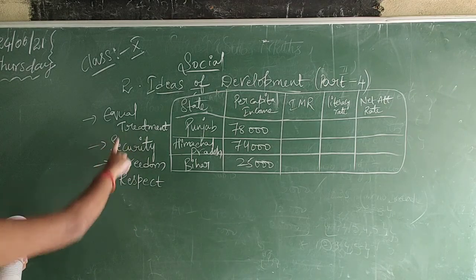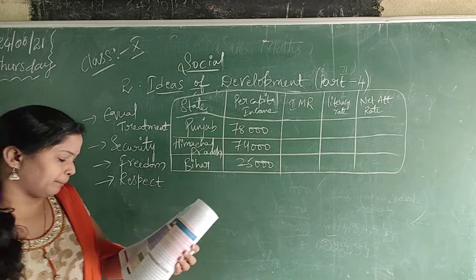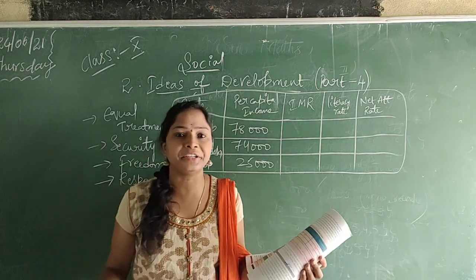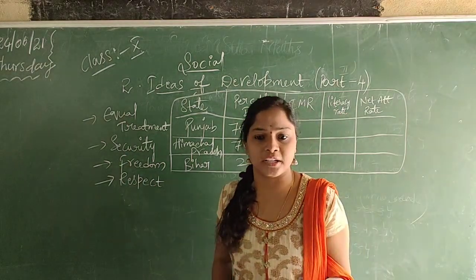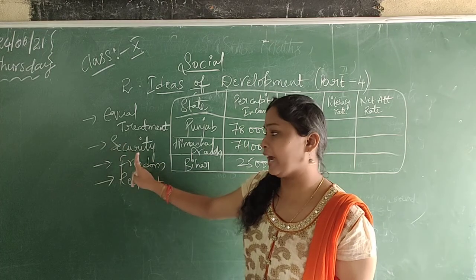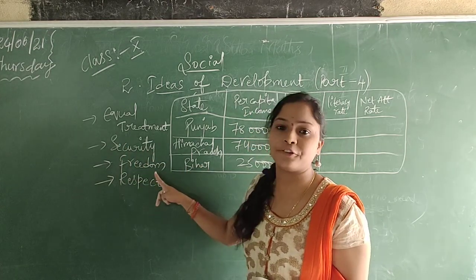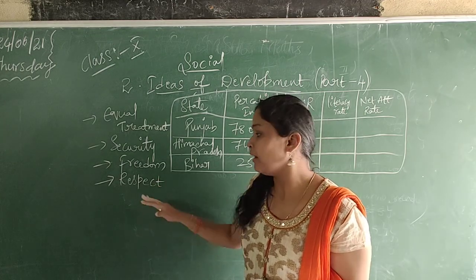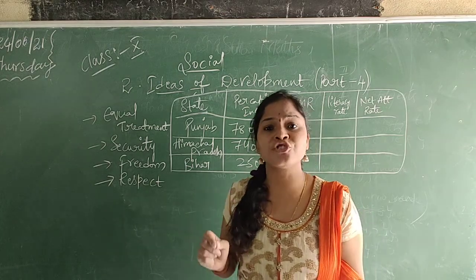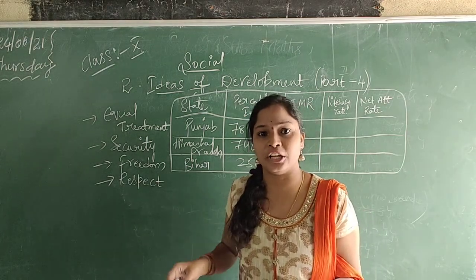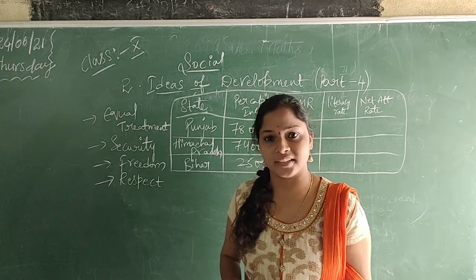Here you can see: equal treatment, security, freedom, respect. For example, if you have only the income goal, you should not see all these things. But if you want to work in a society, you want equal treatment and security for your job, freedom for your living. Next is respect — equal respect, no gender bias, equality. These all things will be assessed by seeing the income and the other criteria.